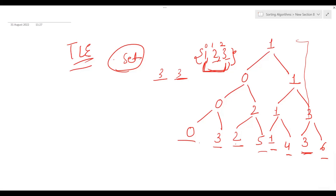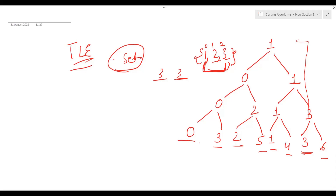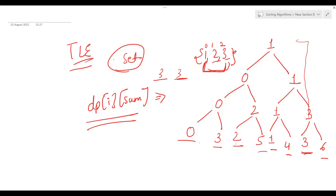For memoization, we use a 2D dp array. For a given index and a given sum, if we've already visited that state, we mark dp[i][sum] = 1. Before making recursive calls, we check if dp[i][sum] is not zero — if so, we return immediately, avoiding redundant computation. This ensures we optimize our code and avoid repeating ourselves.